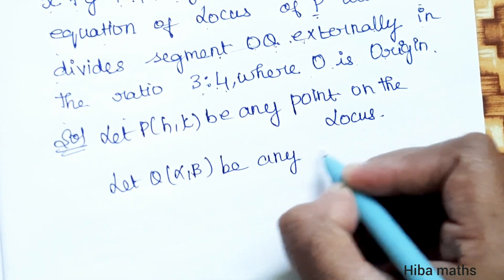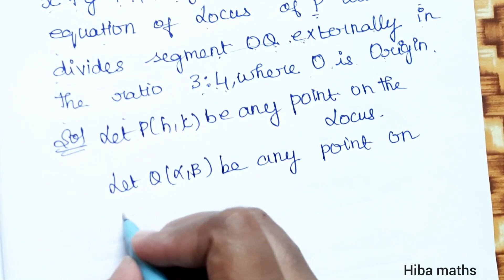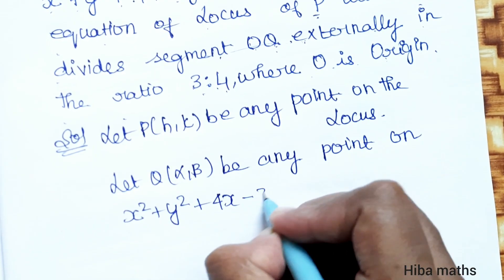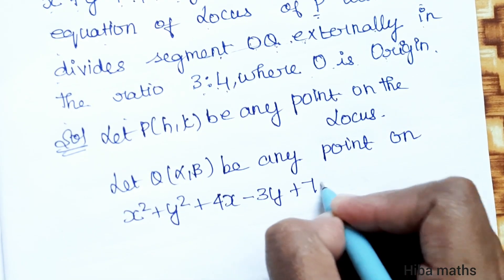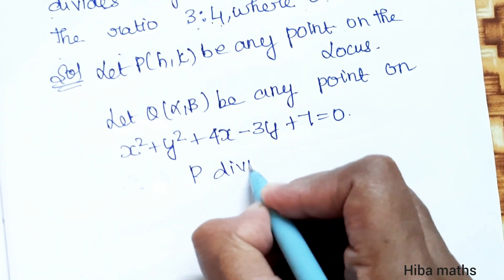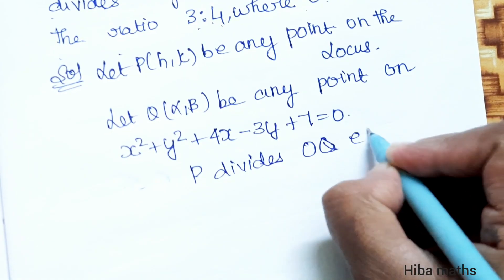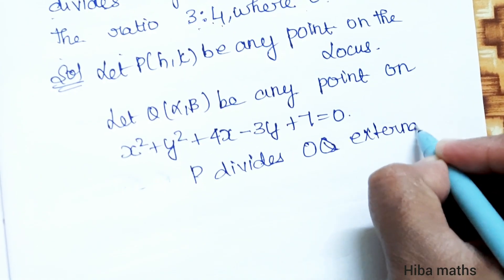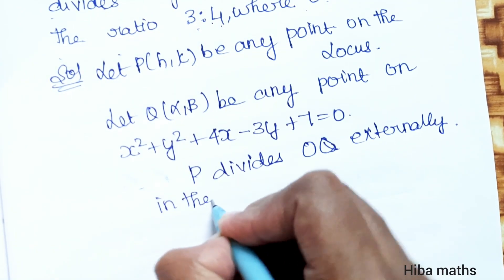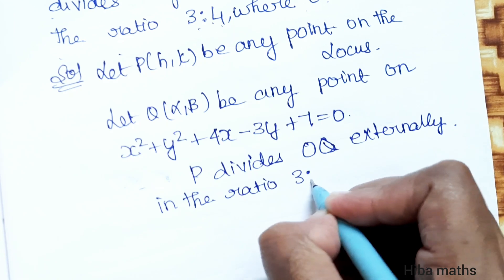Q = (α, β) is any point on x² + y² + 4x - 3y + 7 = 0. P divides OQ externally in the ratio 3:4.